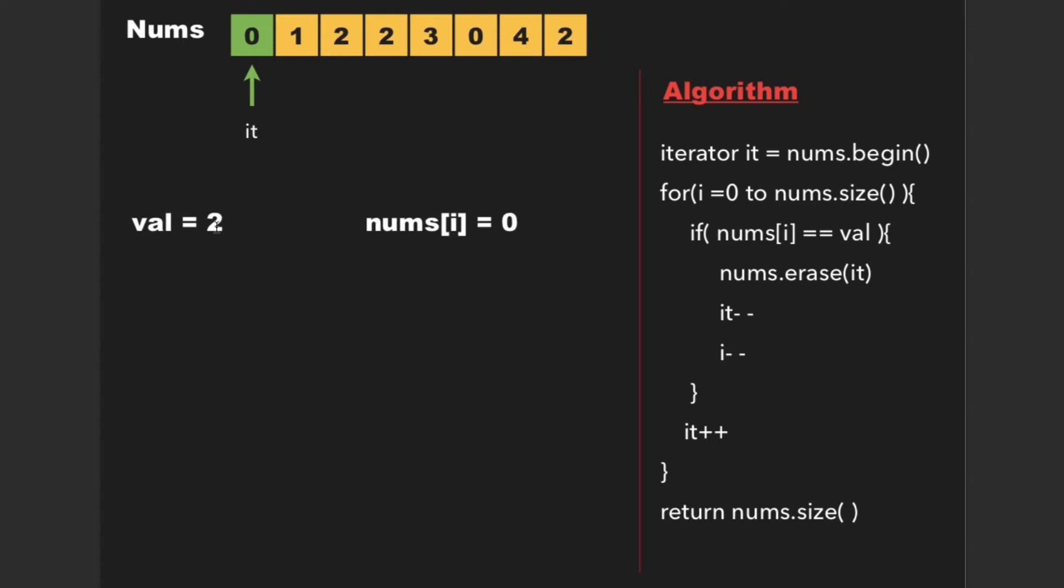whereas val is 2. Since both are not equal, we proceed further. Now it points to 1. Even 1 and 2 are not equal, so we again proceed further.